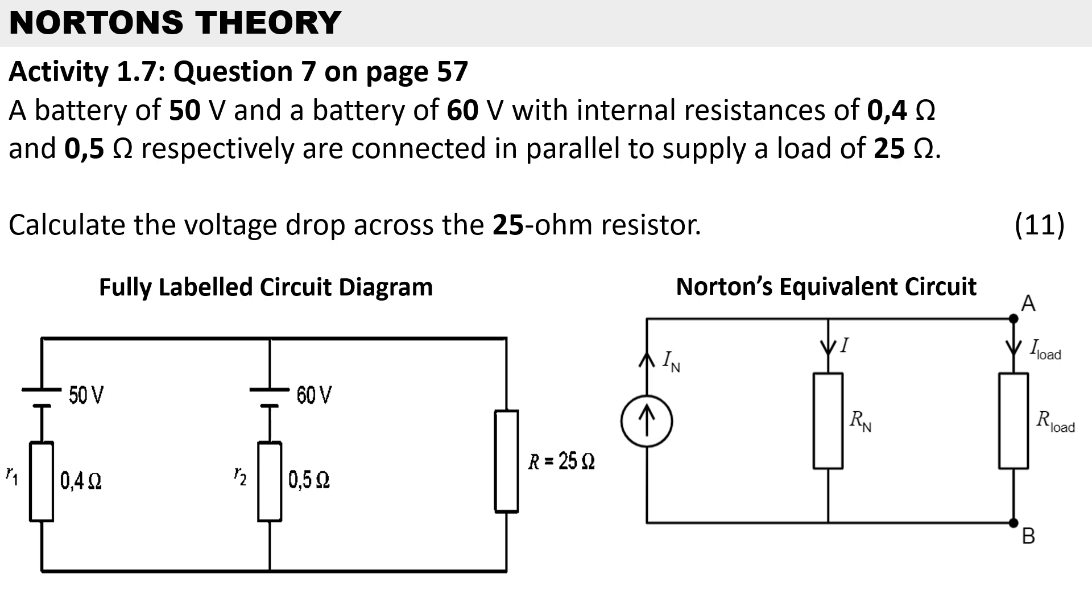This calculation we have to solve using Norton's theorem. It's question 7 taken from the activity in our textbook and it reads as follows: a battery of 50 volts and a battery of 60 volts with internal resistances of 0.4 ohms and 0.5 ohms respectively are connected in parallel to supply a load of 25 ohms.